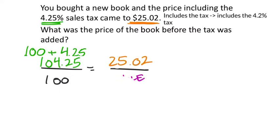So that means what I'm missing here is the whole value. It's the original value in this case. So I'll make that an X. So this was the price of the book. The X is the price of the book before tax.